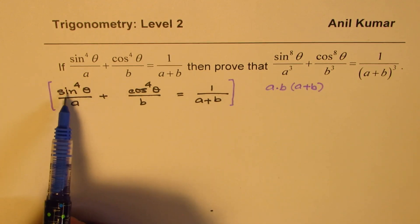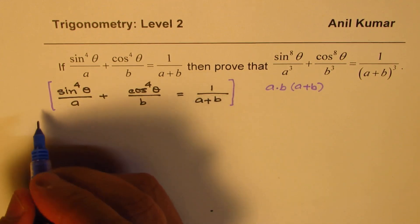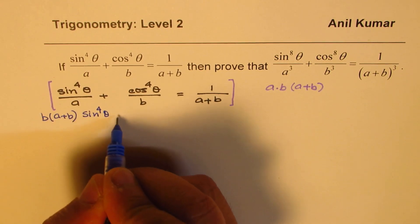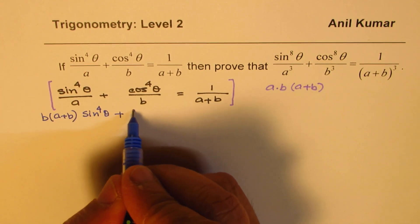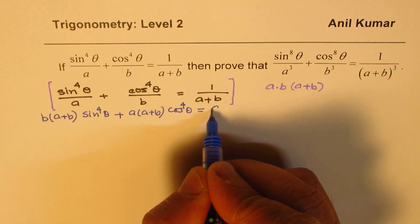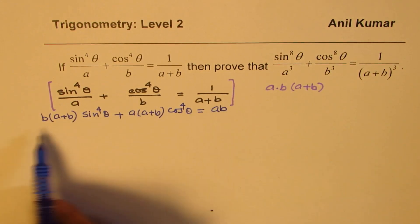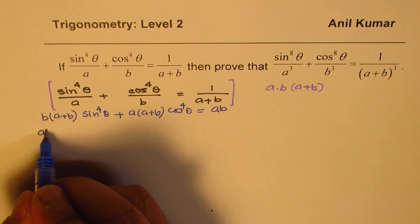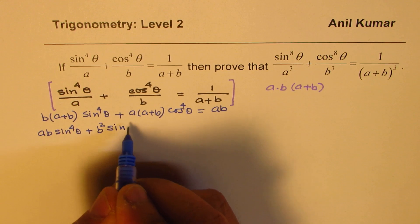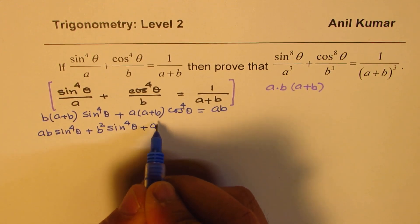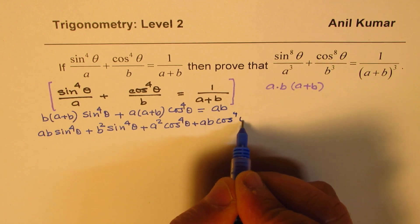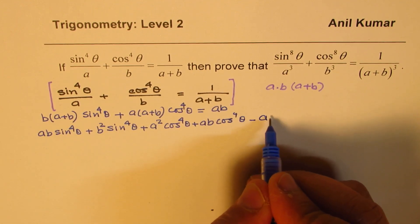So if we do that, the first term gets multiplied by b times a plus b, so we get b times (a plus b) times sine to the power of 4 theta, and the second term gets multiplied with a times (a plus b) times cos to the power of 4 theta, and on the right side we get a times b. Now we can open this bracket, so we get ab·sin⁴θ + b²·sin⁴θ + a²·cos⁴θ + ab·cos⁴θ. Let's bring ab to the left side, so we get minus ab equals to 0.